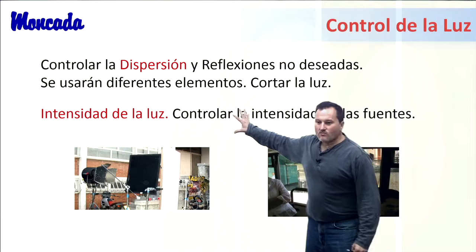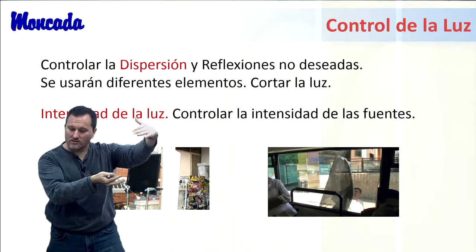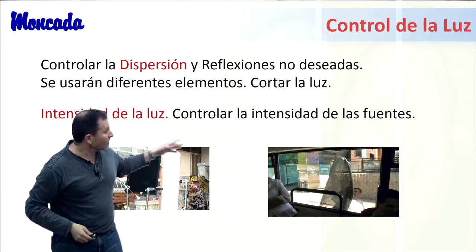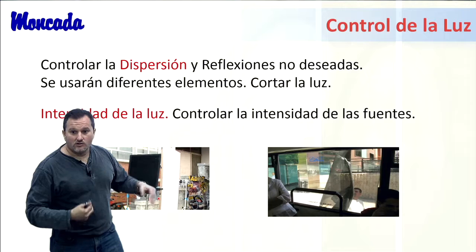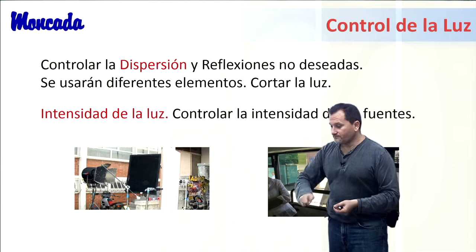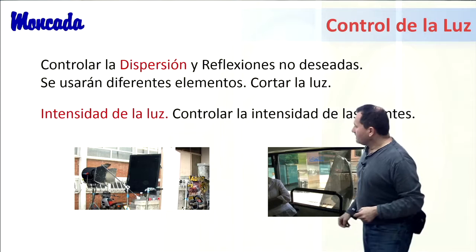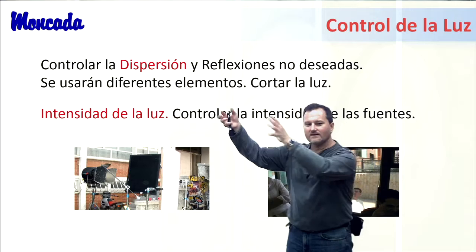Hablamos del control de la luz: dispersión e intensidad. Con mi fuente quiero acotar la zona donde va dirigida y evitar que contamine otras zonas. En cuanto a la intensidad, voy a trabajar para un diafragma determinado en cámara y tendré que ajustar las fuentes de luz bien a través de dimmer, de filtros neutros en el proyector, o de elementos que rebajan los niveles. La cuestión es controlar hacia dónde va la luz y a qué intensidad.